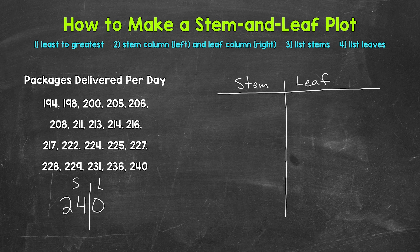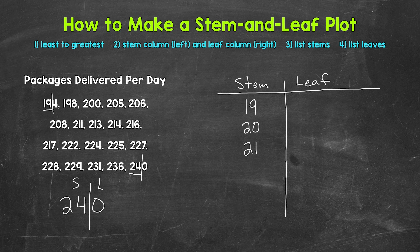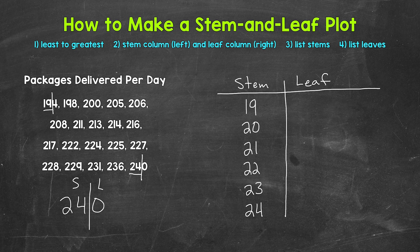Let's look at our lowest value and highest value: 194 and 240. For 194, we split this value here — so our lowest stem is 19. For 240, our highest stem is 24. Now we can list our stems starting at 19, then 20, 21, 22, 23, and 24. So we have the 190s, the 200s, the 210s, the 220s, the 230s, and the 240s — going from the lowest stem of 19 to the highest stem of 24 with everything in between.